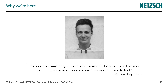Why are we here today? I always bring up this slide by Professor Richard Feynman — one of the greatest physicists. At NETCH we do science, and it comes down to doing science right. As Feynman said: 'Science is a way of trying not to fool yourself. The principle is that you must not fool yourself, and you're the easiest person to fool.' If you keep that in mind, you're on a good way to do science with our instruments.